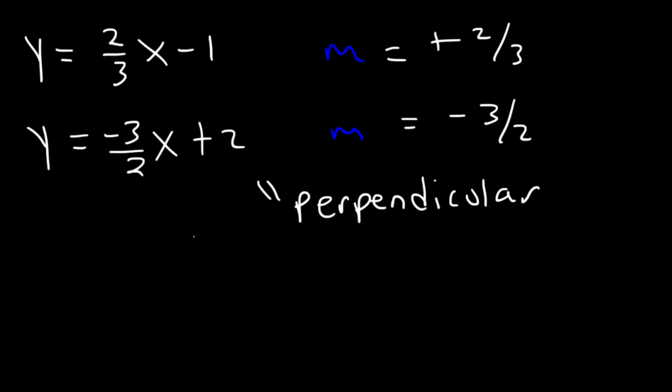So for instance, let's say if the slope of line 1 is positive 4 over 3. The perpendicular line will have a slope of negative 3 over 4. You need to do two things, flip the fraction, change the sign.